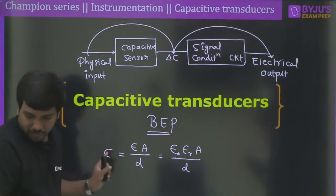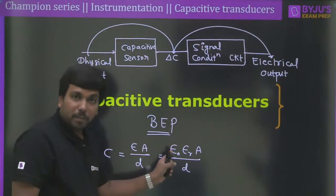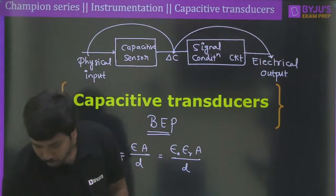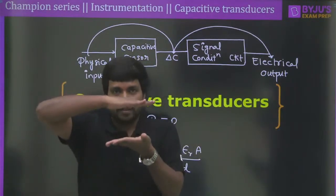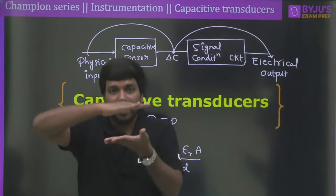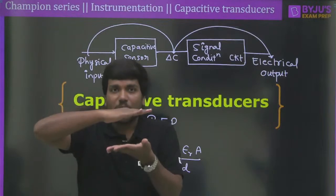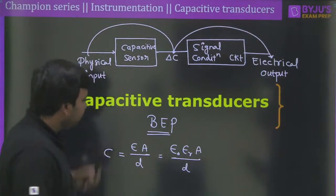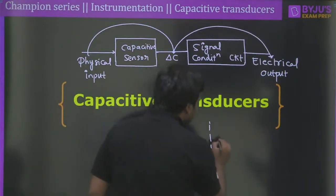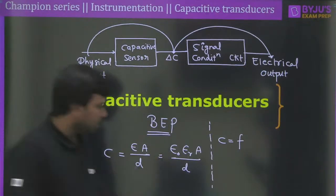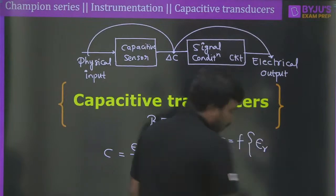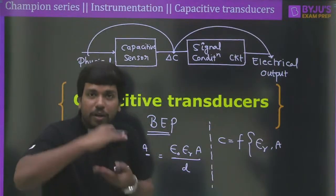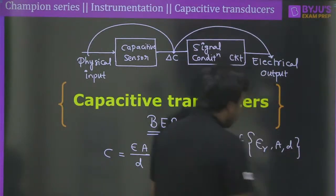Capacitance is a function of three variables: relative permittivity of the medium, area of overlapping, and distance between the plates. If you change any single variable, the capacitance will change. Therefore, in any GATE question on capacitive sensors, at least one of these three variables will change — and that is how you should start any particular question.